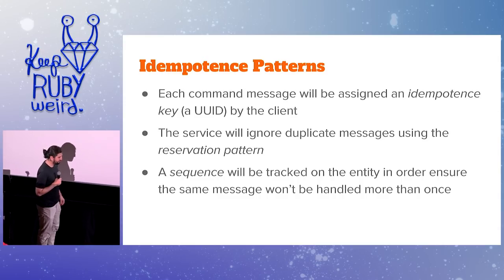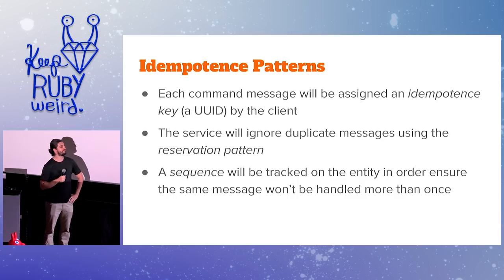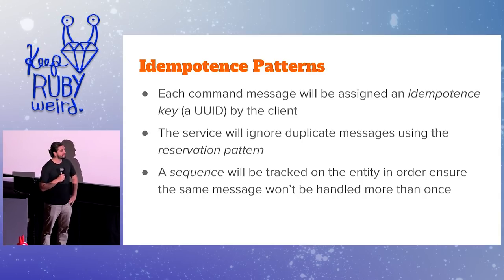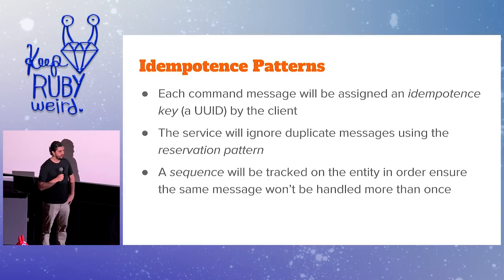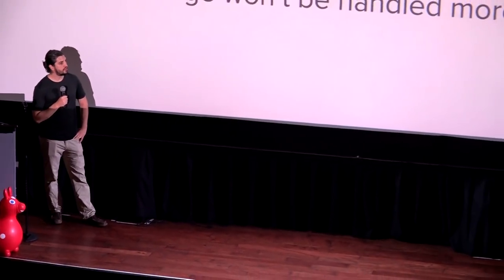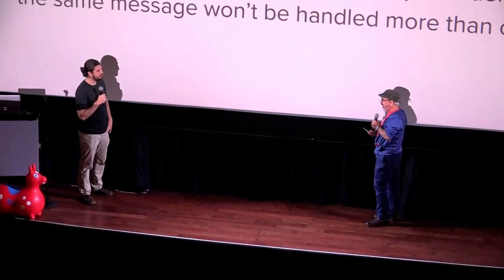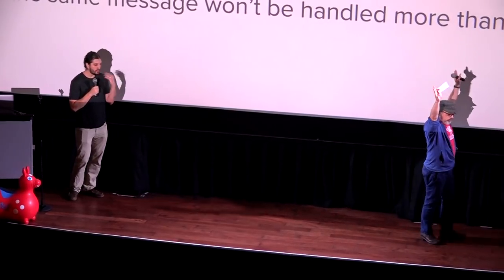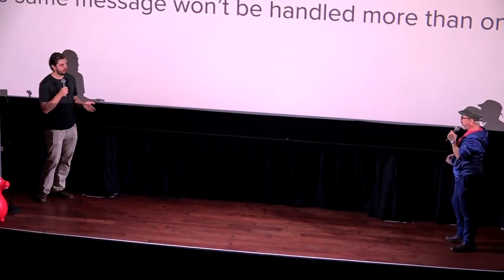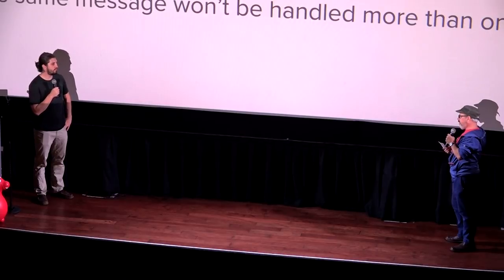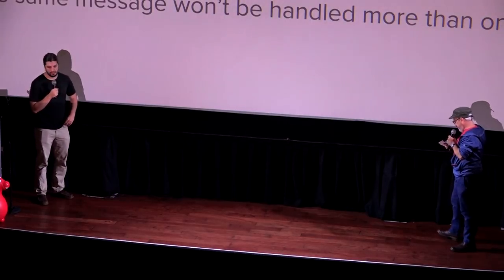Nathan asks: "Why not just use a message broker that guarantees exactly-once delivery instead of idempotence keys and reservation patterns?" Speaker: "How does it guarantee exactly-once delivery? You take a message off the queue and send an ACK when you're done. How do you send the ACK? Over the network. Can't that fail? Yes. So what happens if it fails? Then you handle the message again. So that doesn't work either."